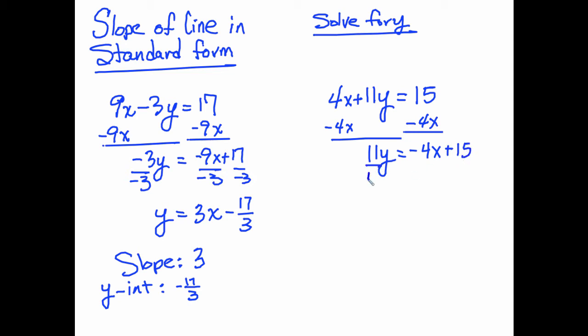We could divide each side by 11, and that would leave y equals negative 4 elevenths x plus 15 elevenths. We can see that the slope is negative 4 elevenths, and the y-intercept is equal to 15 elevenths.